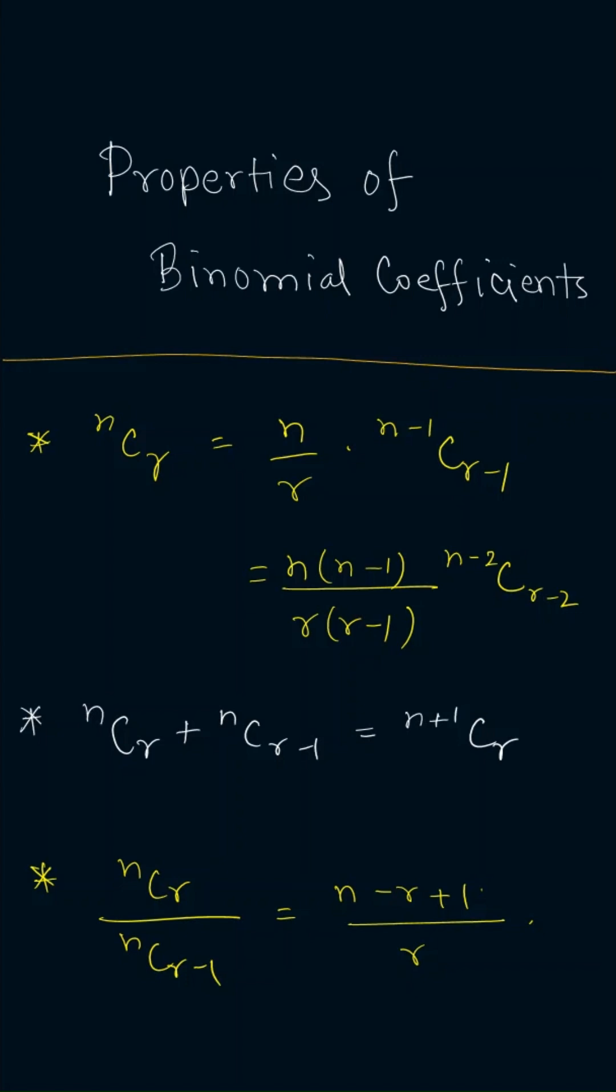Other two important properties of binomial coefficients are NCR plus NCR minus 1 equal to N plus 1 CR, and NCR divided by NCR minus 1 equal to N minus r plus 1 divided by r.